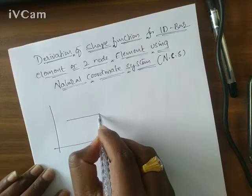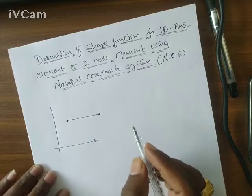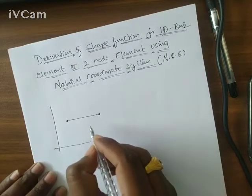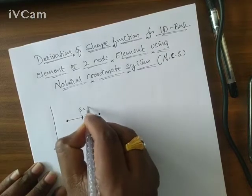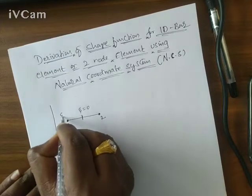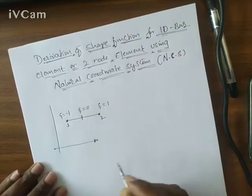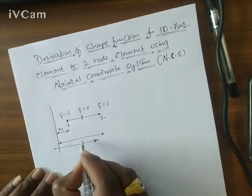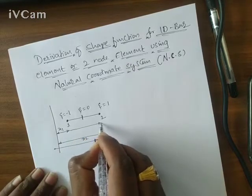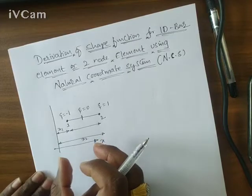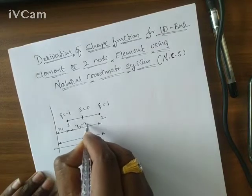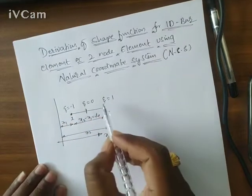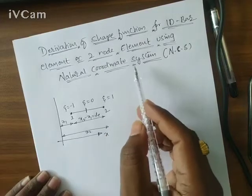In the last lecture I explained how to draw the 1D bar element sketch. Here, zeta (ζ) equals 0 at the center; at node 1, ζ = -1, and at node 2, ζ = +1. If this distance is x1 and this distance is x2, then x2 minus x1 equals the length of the element. I am using ζ because the derivation is asked in the natural coordinate system.